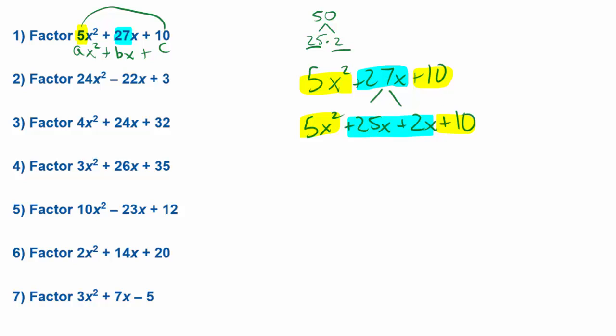Now we're going to go ahead and factor this by grouping. Since we have four terms, we're going to factor the first two and we're going to factor, it's important to keep the sign in here. I'm going to factor this now by grouping. So imagine that we have just 5x squared plus 25x plus 2x plus 10.